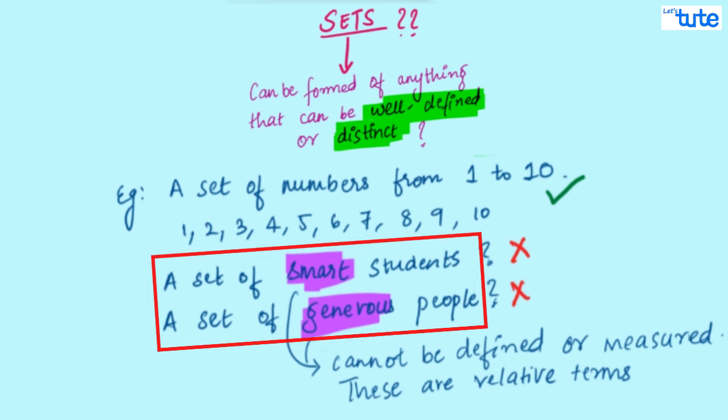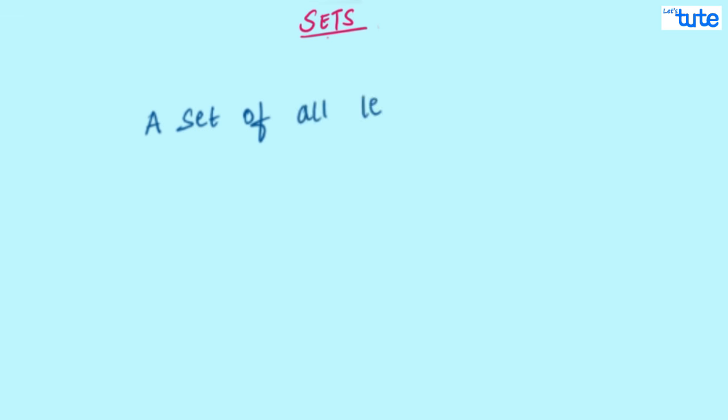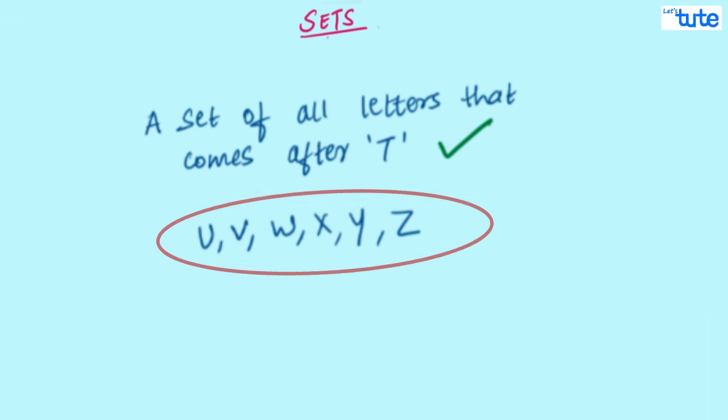Hence, we cannot make a set of these situations. Let's take a simpler example. A set of all the letters that comes after T. So, what all letters will be there? U, V, W, X, Y, and Z. Yes. So, this can be also called as a set. Right?